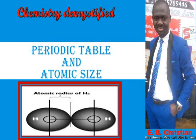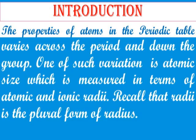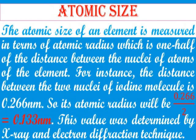Hello students, welcome to chemistry class. In our last class we looked at the periodic table. Today we're going to continue from there — we are looking at periodic table and atomic size. Your presenter remains E.B. Christian. The properties of atoms in the periodic table vary across the period and down the group. One such variation is atomic size, which is measured in terms of atomic and ionic radii. Recall that radii is the plural form of radius.